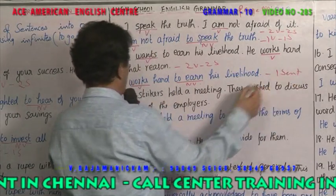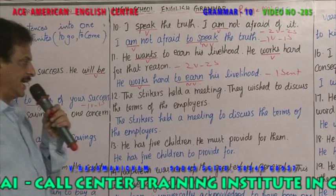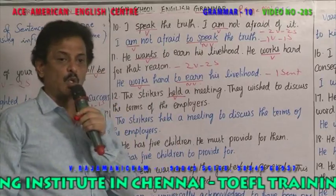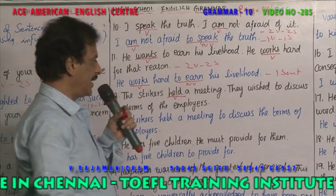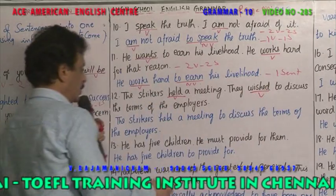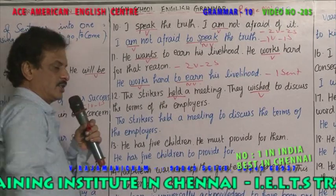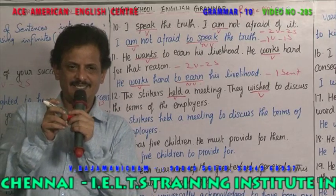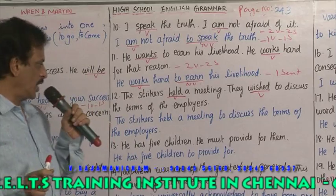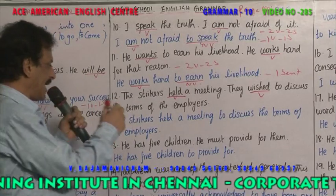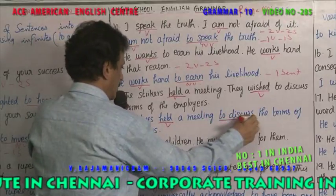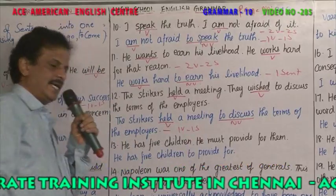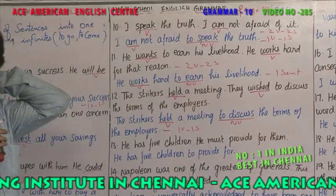Example 7: 'The strikers held a meeting' — 'held' is the past tense of 'hold.' 'They wished to discuss the terms of the employers' — 'wished' is the verb. An employer is the boss, proprietor, or entrepreneur. Combined: 'The strikers held a meeting to discuss the terms of the employers.' 'To discuss' is an infinitive. One verb, one sentence.